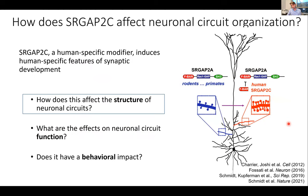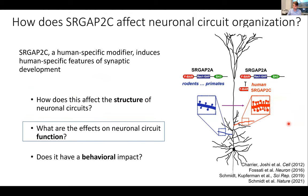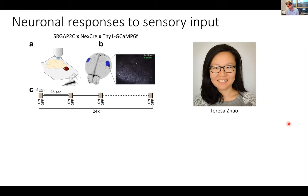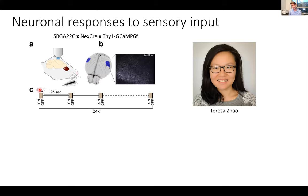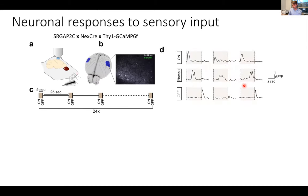What does that do to the function of these neurons? Because we were working in the somatosensory cortex, I collaborated with the Elizabeth Hillman lab at Columbia University — with graduate student Teresa Zhao — to do in vivo two-photon imaging of layer 2/3 cortical neurons during a simple sensory stimulus. For the barrel field somatosensory cortex, that means whisker stimulation: five-second whisker stimulation with a 25-second intertrial interval, repeated 24 times. This yields different neuronal response types — on-responses, offset responses, and others.